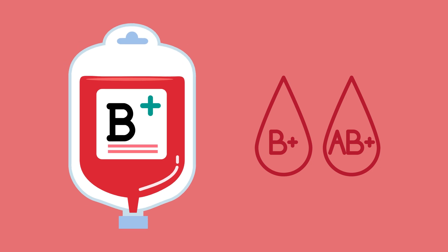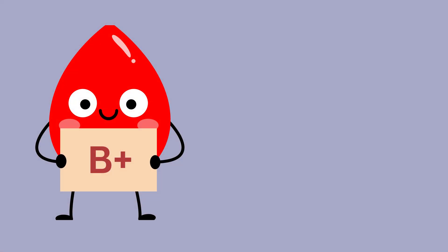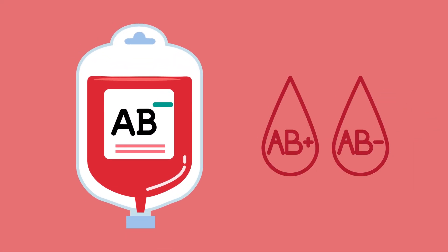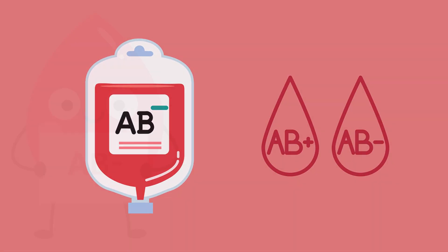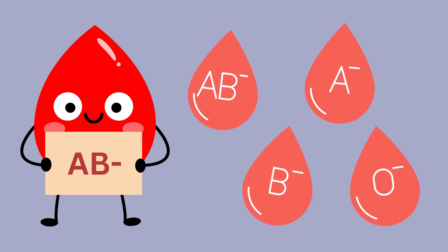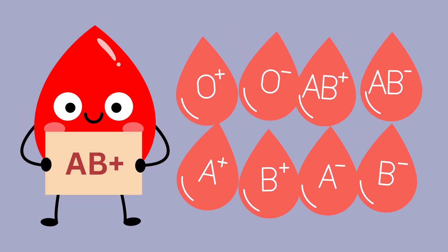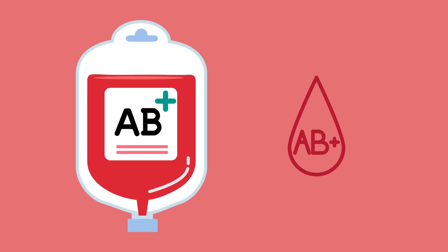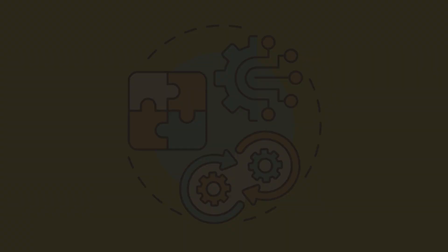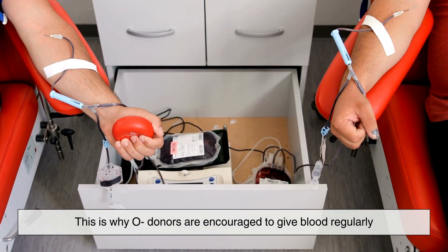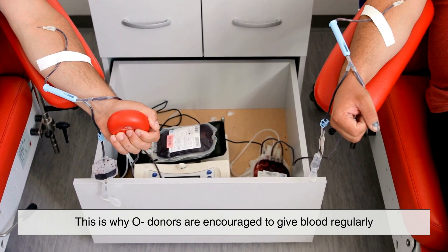Type B positive can donate to B positive and AB positive, but can receive from B positive, B negative, O positive, and O negative. Type AB negative is the universal recipient, meaning it can receive blood from any type, but can only donate to AB positive. Because of these compatibility rules, O negative blood is the most valuable in emergencies since it can be given to anyone, which is why O negative donors are encouraged to give blood regularly.